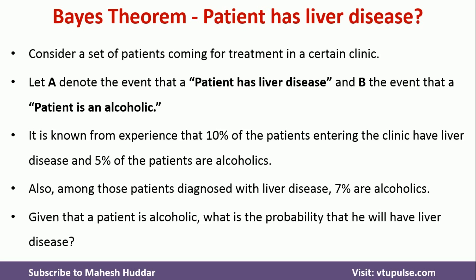Given this data, and knowing the new patient is alcoholic, we want to find what is the probability that the new patient will have liver disease.